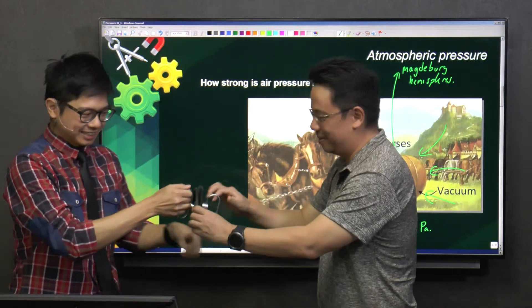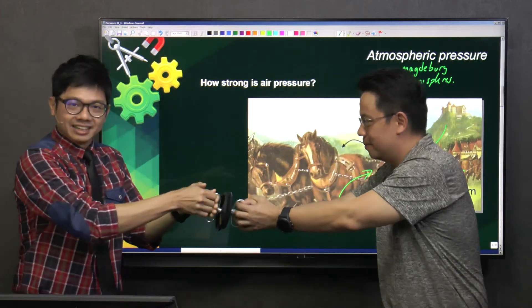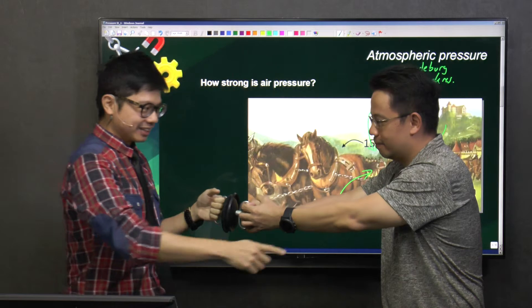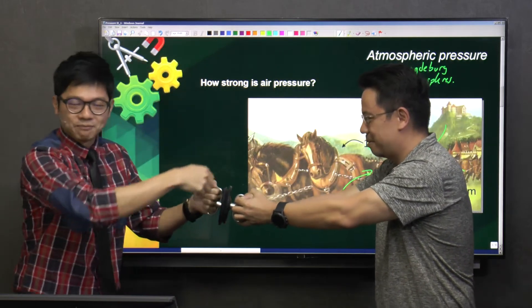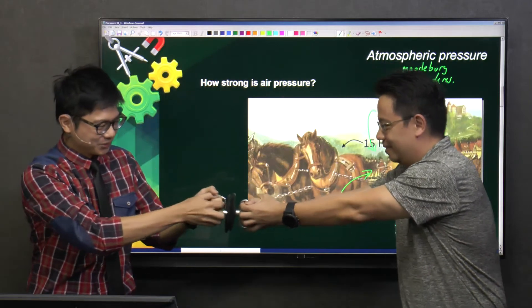So now I'm going to pull this side, and Mr. T is going to pull the other side. You know, we are very strong. You see? Mr. T has muscles, and I also have muscles. But let's see whether we can pull this open. One, two, three.